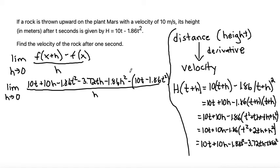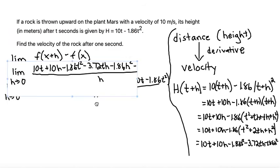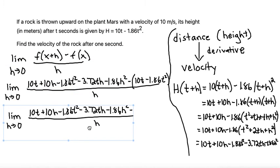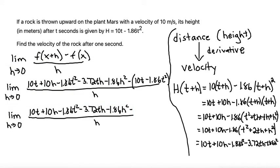From here, I can distribute my negative. I'll distribute to the 10t to make that negative, and then a negative times a negative is a positive, +1.86t².